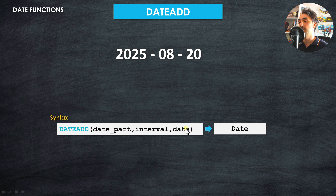The DATEADD function takes three arguments: the date part you want to manipulate, the interval (how many days or months to add), and the date field itself. For example, to add three years to a date, you specify the date part as 'year', interval as three, and provide the date field. Tableau adds three years while keeping months and days unchanged.